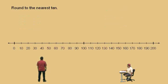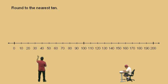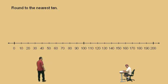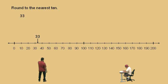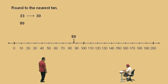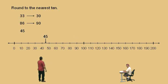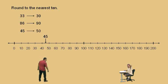Now we're going to round again to the nearest 10, Charlie, but we're using a different scale. Our number line goes from 0 to 200, and we've only marked the 10s because we want to round to the nearest 10. Let's start with 33 — which 10 is it closest to? 30. Very nice. How about 86? That would be 90. Please continue, Charlie. We have a 45. Remember, it's in the middle, so we round to the right — that gives us 50. Very nice, Charlie.